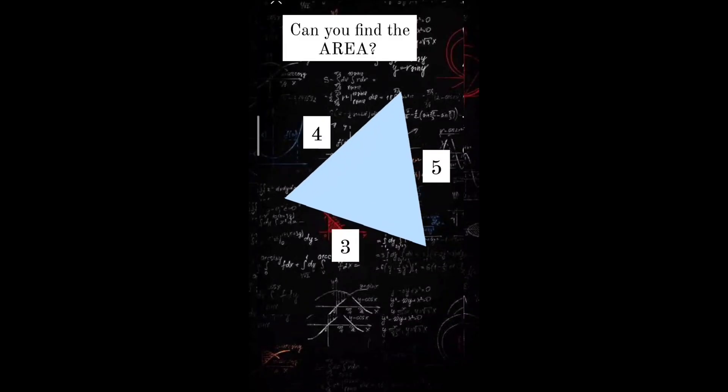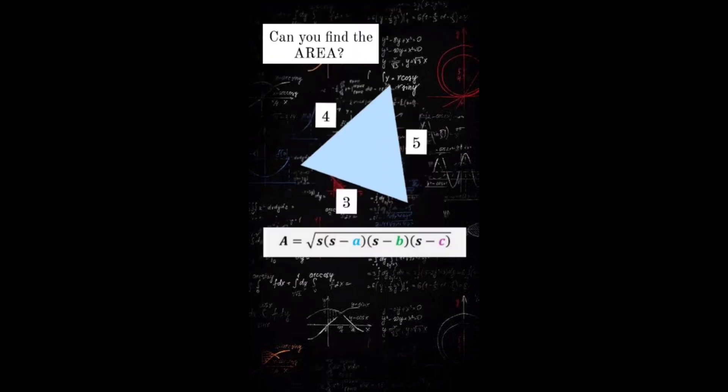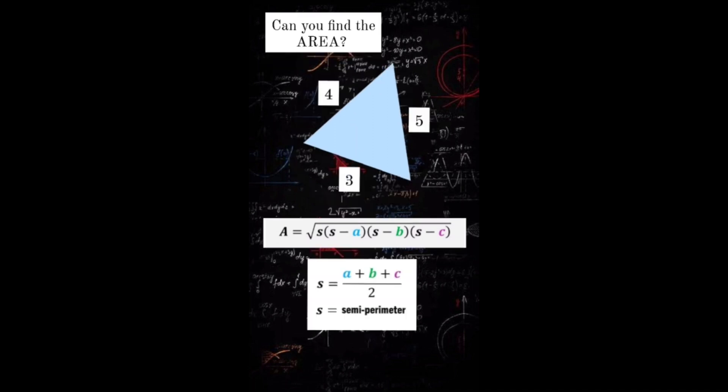Can you find the area? In this problem, we will use the formula: A equals the square root of S times S minus A, times S minus B, times S minus C, where S is the semi-perimeter, and A, B, C are sides of the triangle.